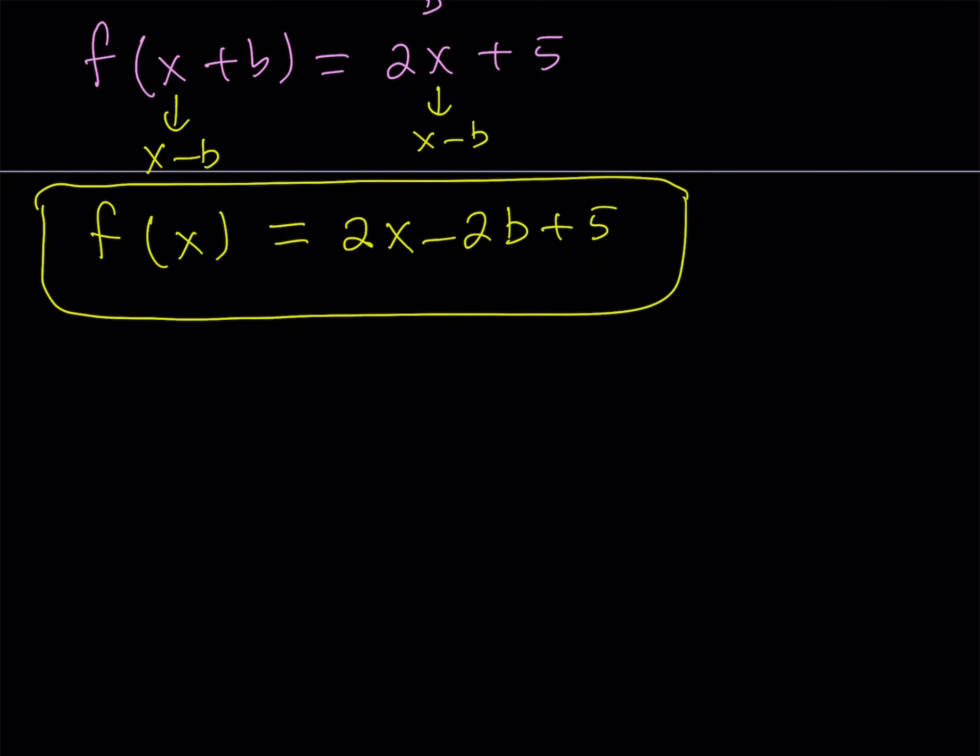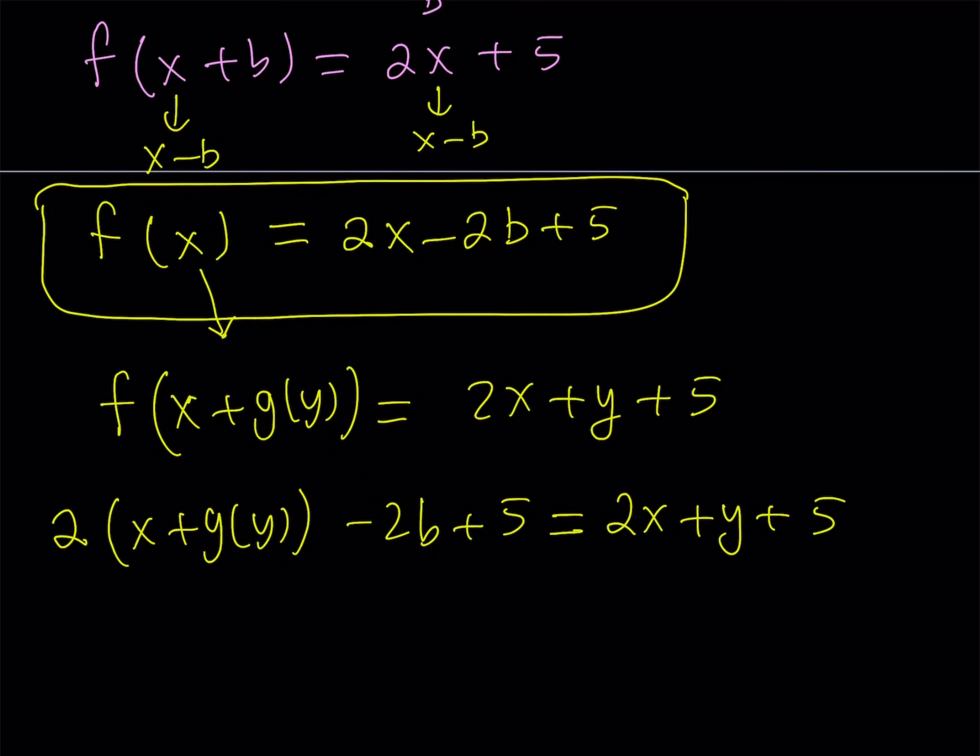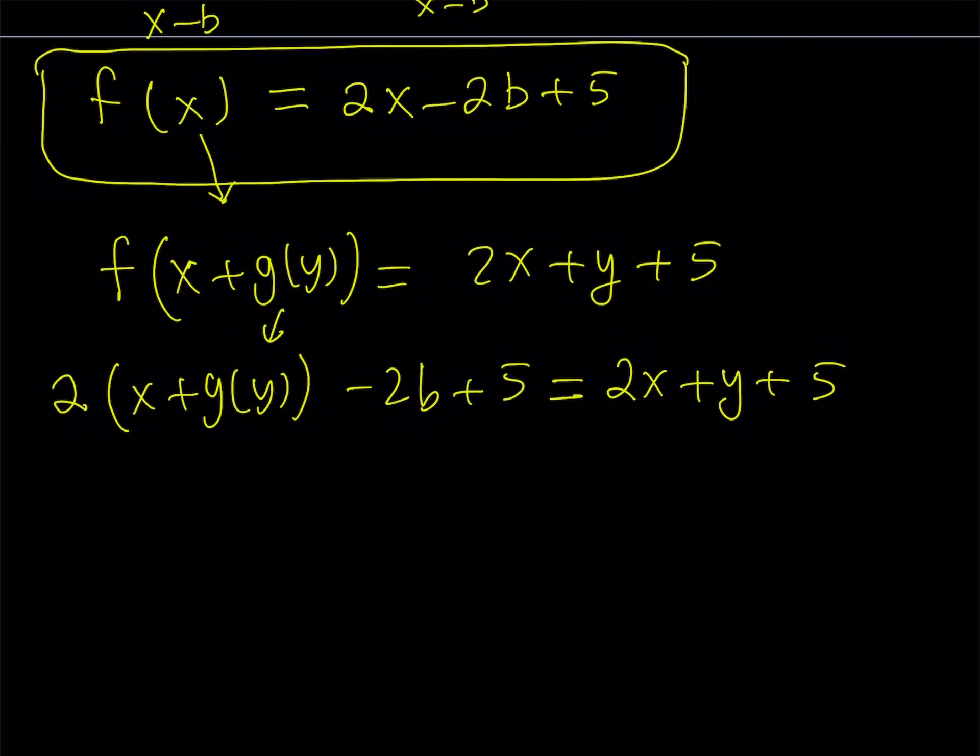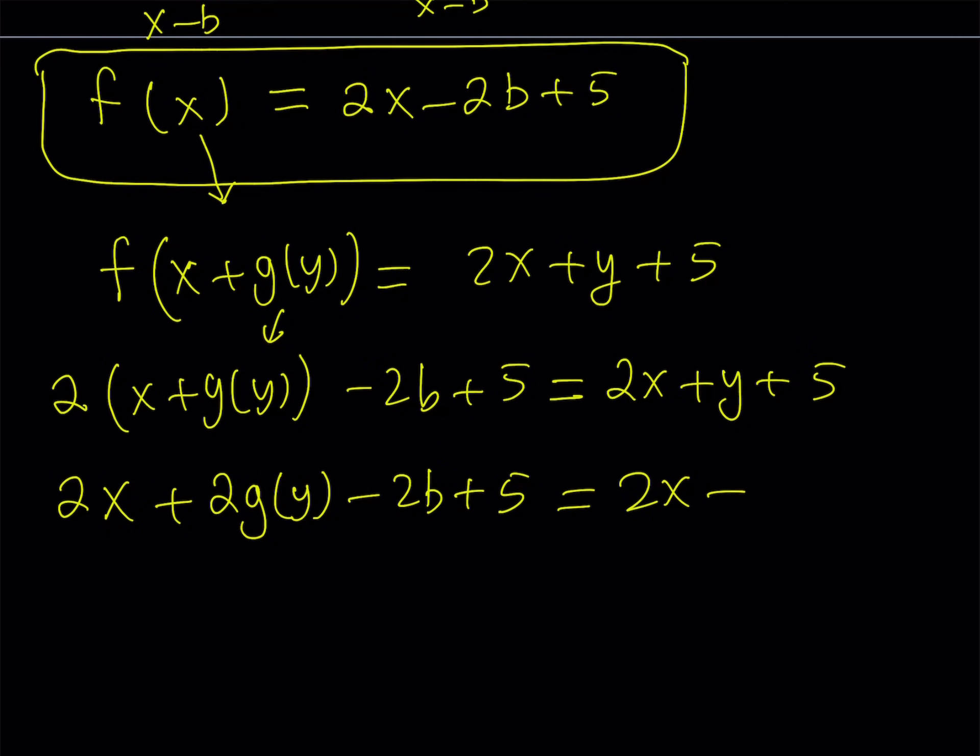So now I got f of x, which is nice because it's important to be able to isolate one of the functions here. And we got a value for f of x. We don't know the value of b, but that's okay. It's just a constant, and that's fine. Now, we're going to be using something given, of course. And if you look at the original problem, we were given that f of x plus g of y is equal to 2x plus y plus 5. This was given, and then that's where we find the f of x from, but we can use it again.